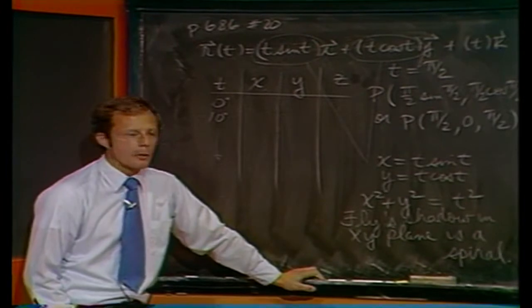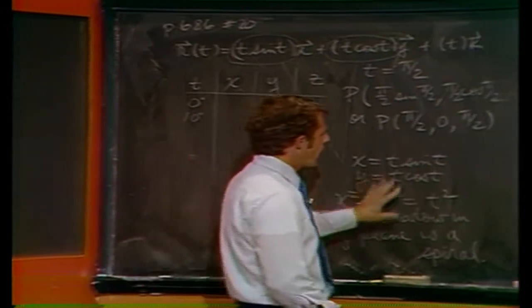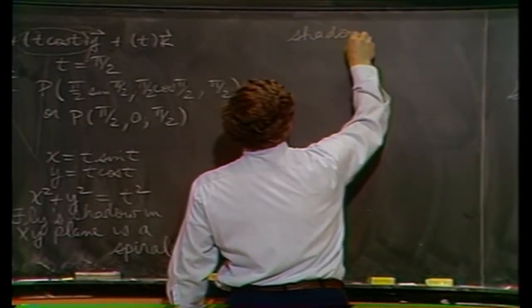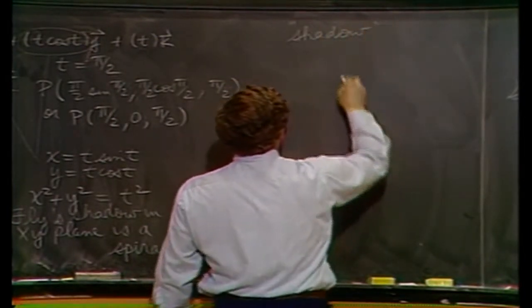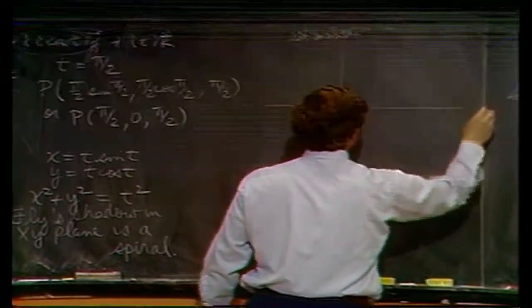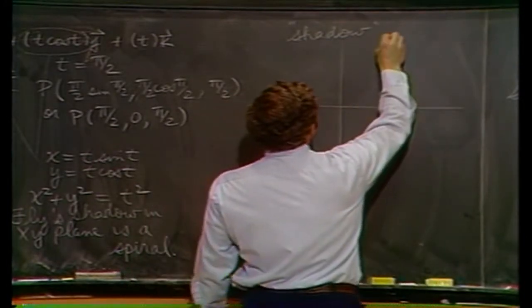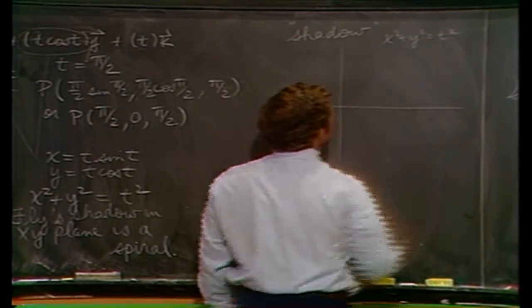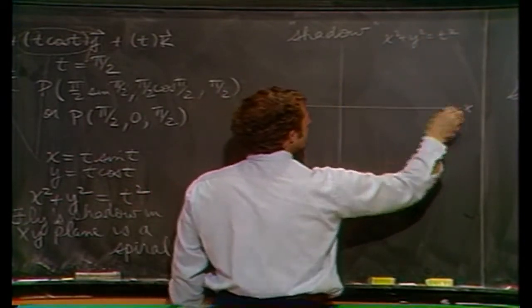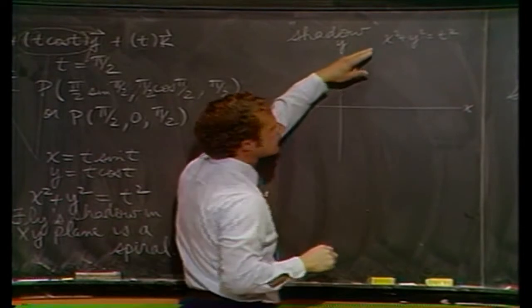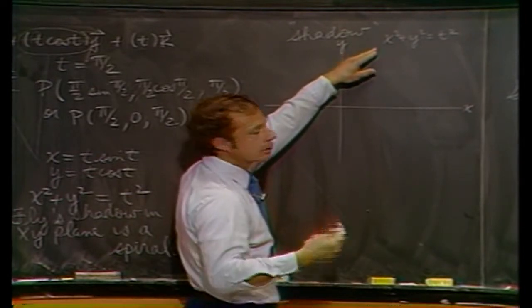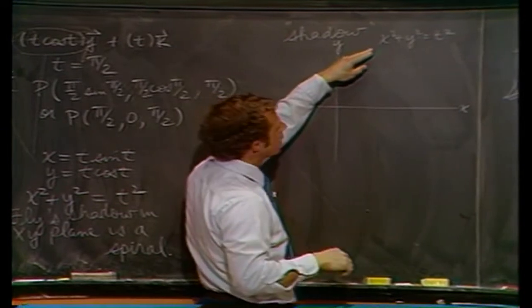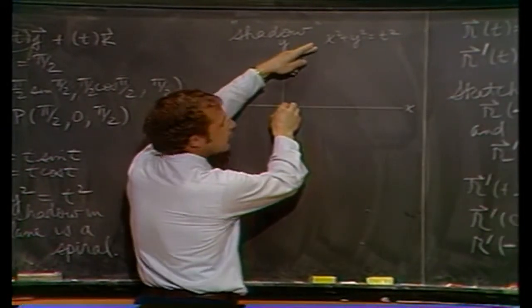Now, why does it tell me that? Well, let's just graph that part of it. Here's the shadow. We can probably do this pretty well without going through an elaborate table. If t equals 0, which is probably where I'm interested mostly, we're at the origin.